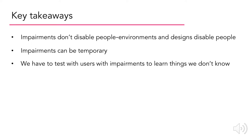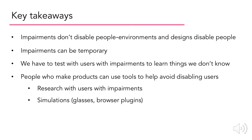Thirdly, if we want to make sure our products are usable by people with impairments, we have to do usability tests with users with impairments. And last of all, there are plenty of tools out there on the web that people who make products can use to help avoid disabling users. Doing research with users with impairments is important. There are also various simulations such as specialty glasses, browser plugins, and other tools that can help people gain empathy and learn more about users with impairments.